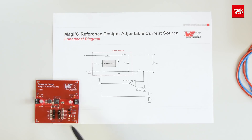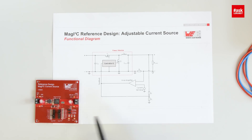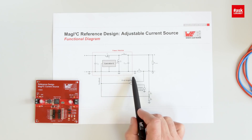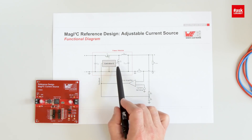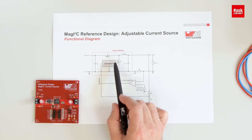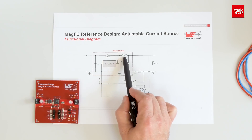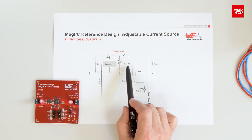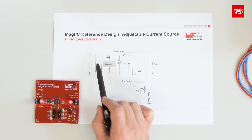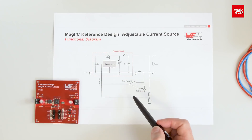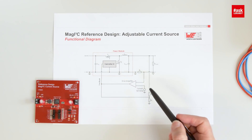Here is the reference design — here is the power module. In the middle, you can see it on the schematic. The power module contains the controller, the MOSFETs, the inductor, and the output and input capacitors. This is a voltage source.